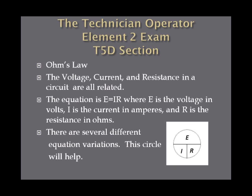There are several different equation variations to solve for each of the three — current, voltage, or resistance — and this memory circle on the slide will help you solve for whatever you're looking for very quickly. For instance, if you're looking for current, you cover up the I and you have E over R. So I is equal to E over R. If you're looking for R, you cover up the R and you get E over I, so R is equal to E over I.